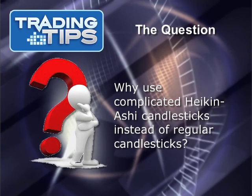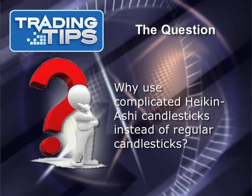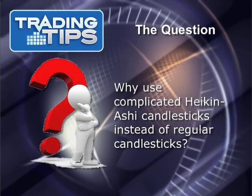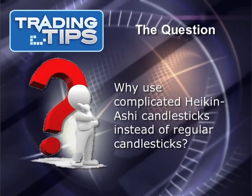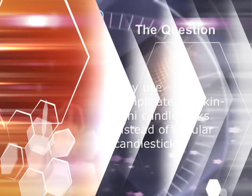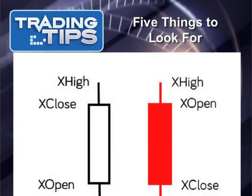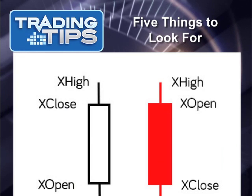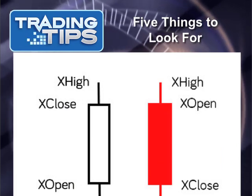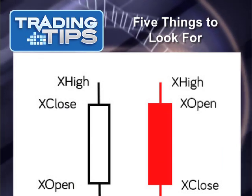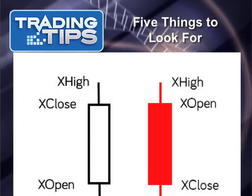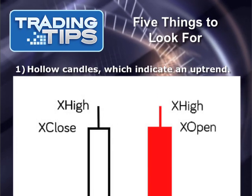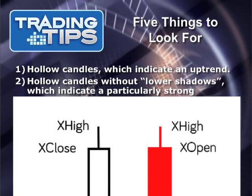The next question you should be asking is: what's the point? Why use complicated Heikin-Ashi candlesticks instead of regular candlesticks? The reason is that Heikin-Ashi candlesticks make trends easier to spot. There are five things we're looking for when analyzing them. Number one: hollow candles, which indicate an uptrend. Number two: hollow candles without lower shadows — just the box with no tail on the lower end — indicating a particularly strong uptrend.